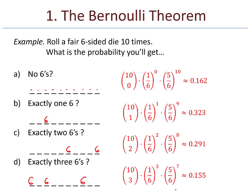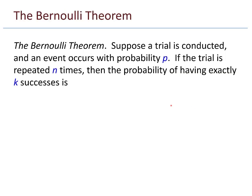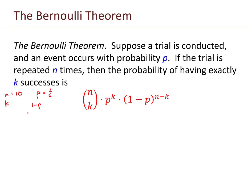This leads us to a general statement: the Bernoulli theorem. Suppose a trial is conducted and an event occurs with probability p — like rolling a die and getting a 6, which occurs with probability one-sixth. If the trial is repeated n times, then the probability of having exactly k successes is n choose k, times p to the k, times 1 minus p raised to the n minus k. In the previous example, n was 10, k went from 0 to 3, p was one-sixth, and 1 minus p was five-sixths.